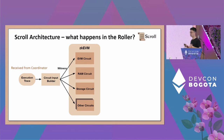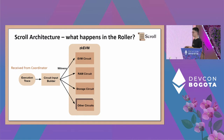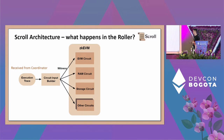The RAM circuit proves that your read and write operations for the virtual machine are consistent — for example, if you previously wrote to some location and then read from it, the RAM circuit can prove those are consistent. There is also a storage circuit that proves that storage updates are done correctly. There are additional circuits for other EVM functionalities, including an ECDSA circuit for signatures, and some Keccak circuits and other circuits for other functionalities.